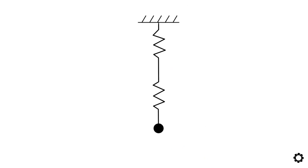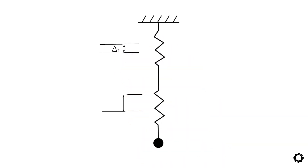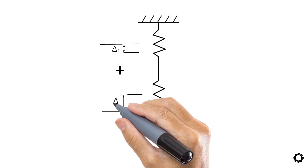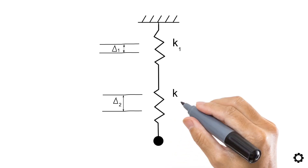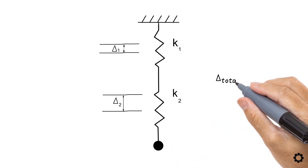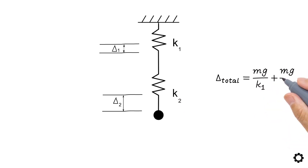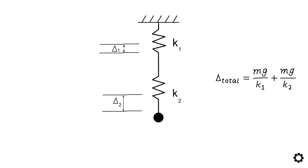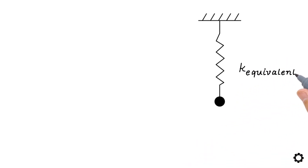You can see pretty clearly that the deflection of a system with springs in series is going to be equal to the deflection of the top spring plus the deflection of the bottom spring. If we name the top spring as spring number 1 and the bottom spring as spring number 2, then the total deflection of the system will be: delta total equals m times g divided by k1, plus m times g divided by k2.